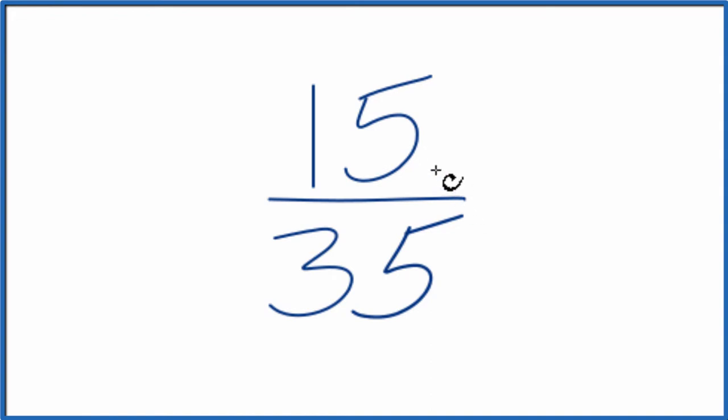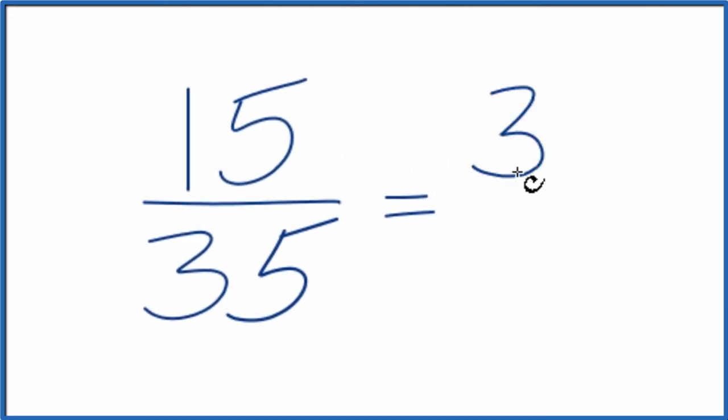What we can do is it looks like we could divide 5 into the numerator and the denominator. So let's try that. 15 divided by 5, that gives us 3. Then 35 divided by 5, that's 7, because 7 times 5, that gives us 35.